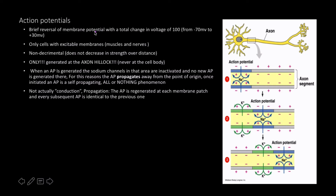In this video we've mentioned how graded potentials work; now let's talk about action potentials. Action potentials are electrical signalings happening from the axon hillock down the axon, and ultimately what they result in is the release of a neurotransmitter.